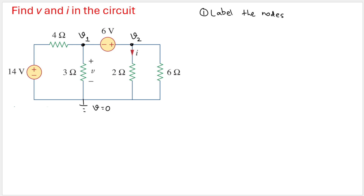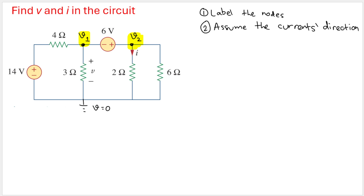We need to find what v1 and v2 are. The second step is to assume the current direction. Let's assume this current is going to the right, this one going down, this one going to the right, this one going down, and this one going down.